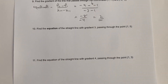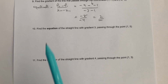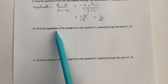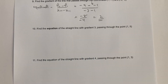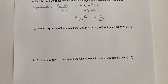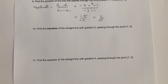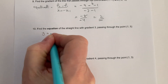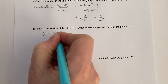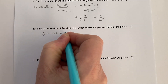Now in this particular one we've got a slightly different type of question where we're looking at finding the equation of a straight line with a gradient of three passing through the point (1, 5). The standard form for the equation of a straight line is y equals mx plus c.